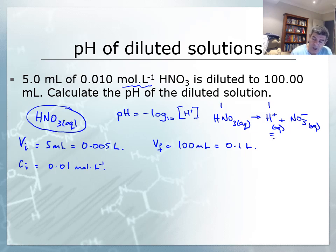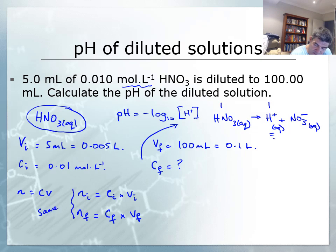I need the final concentration. To find the relationship between initial and final solution, I know that number of moles equals concentration multiplied by volume. I haven't actually added any acid during the dilution, only water. Therefore, the number of moles initially is the same as the number of moles finally. So C initial V initial equals C final V final.